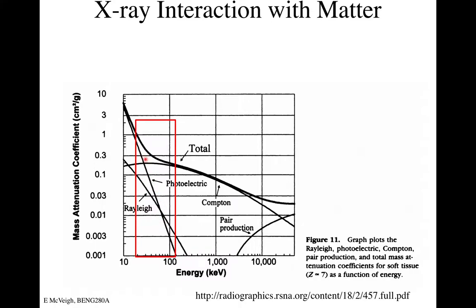This gives us an opportunity for multi-energy imaging. If we had a mono-energetic X-ray source, we could take a picture at, say, 50 keV — where the ratio of photoelectric to Compton is significant — and another at 200 keV where there's no photoelectric effect, only Compton. Those two pictures look quite different, giving you multi-dimensional data for different tissues. That's called multi-spectral imaging.